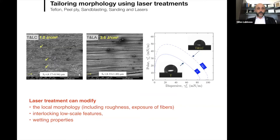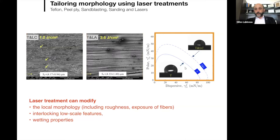By tailoring laser fluence, you can modify local morphology: add roughness, expose fibers, introduce interlocking micro-scale features where the interface resin interlocks with the substrate, or modify wetting properties. Looking at the wetting angle, you start with an initial wetting angle before laser treatment and significantly increase it after laser treatment, thereby improving wetting properties.